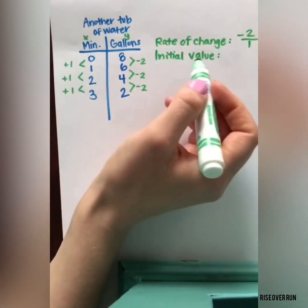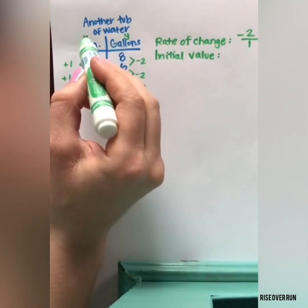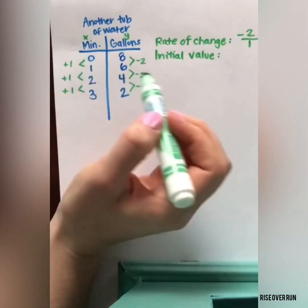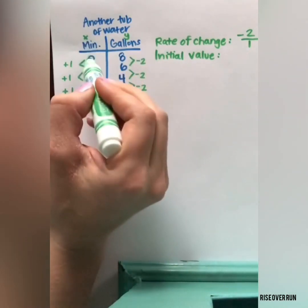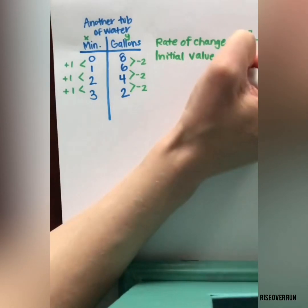The initial value, that means the starting value or the y-intercept. So the y-intercept always has an x value of 0. And if we look in our table, we see 0 here. So our y-intercept is 8. The actual ordered pair would be 0, 8.